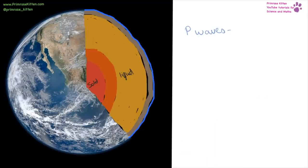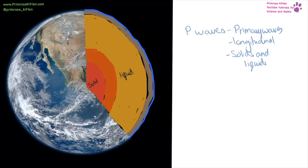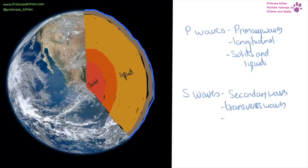When an earthquake occurs, we can use the resulting waves to give us information about the structure of the Earth. P waves are primary waves — they are longitudinal and can travel through solids and liquids, meaning they can travel all the way through the Earth including through the solid core. S waves are secondary waves — they are transverse and can only travel through solids, not liquids. Because of these two different types of waves and how they are detected on the opposite side of the Earth, this tells us about the structure of the Earth's interior.